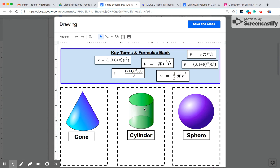The formula for the volume of a cylinder is pi times the radius squared, r squared, times the height.